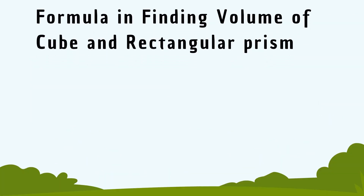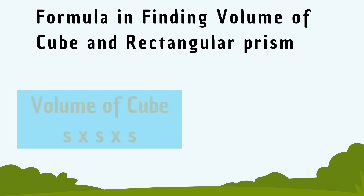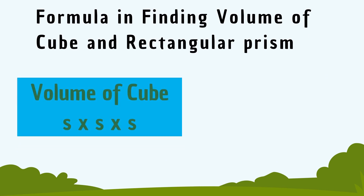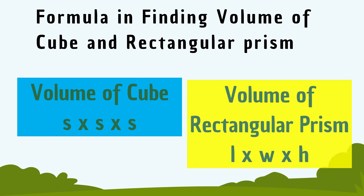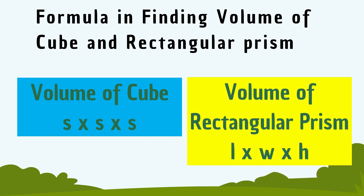So, the formulas we came up with are: the volume of a cube is s times s times s, or s cubed; and the volume of a rectangular prism is length times width times height.